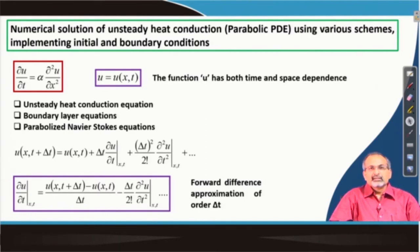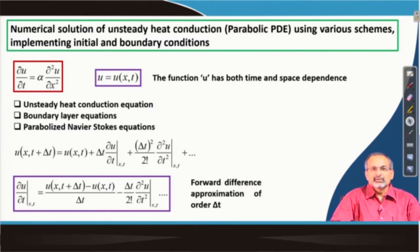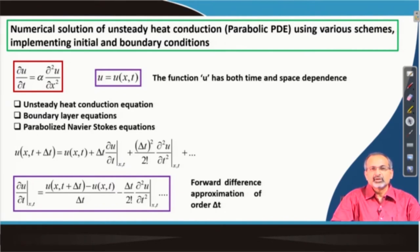Apart from that, you could have parabolic partial differential equations in boundary layer equations, where you have a thin viscous layer formed on a surface when you have a relatively high Reynolds number flow over such a surface. However, the viscous effects do not percolate beyond that thin layer. In such a case, you have a boundary layer formation on the surface of a body and the governing partial differential equations are of the parabolic kind.